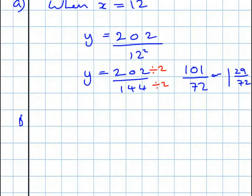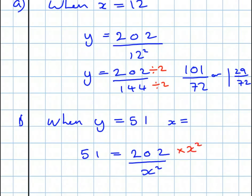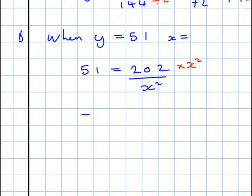Part B. When Y equals 51, X equals. We'll replace Y with 51. Now, let's get rid of that X squared. So multiply the whole equation by X squared. And we get 51 X squared equals 202. Take the coefficient.